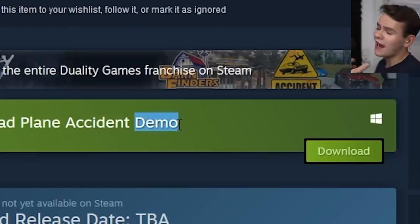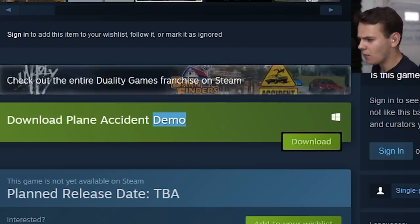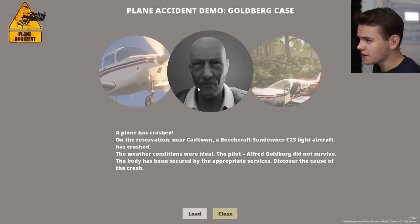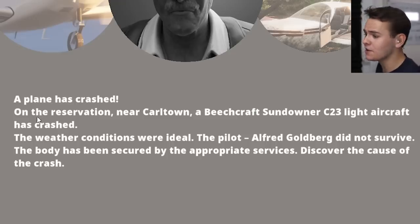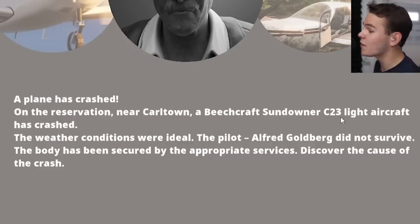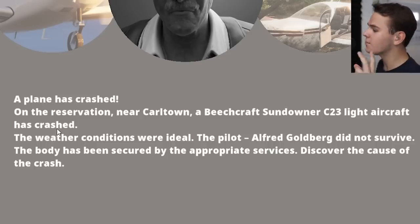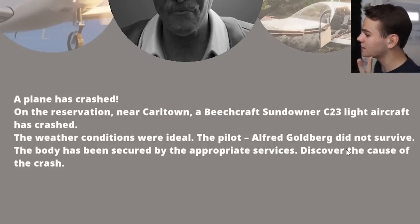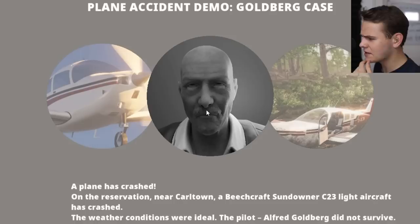This is a demo so I guess we only have one plane crash to try out. New game - we've had a plane accident, the Goldberg case. A plane has crashed on the reservation near Car Town. A Beechcraft Sundowner C-23 light aircraft has crashed. The weather conditions were ideal. The pilot Alfred Goldberg did not survive. The body has been secured, and we need to discover the cause of the crash.